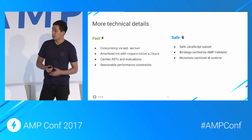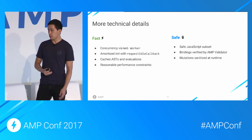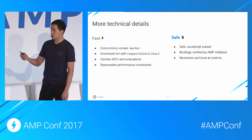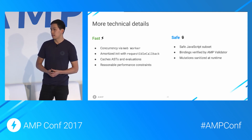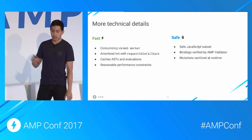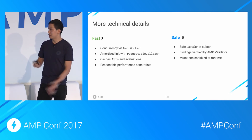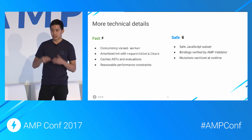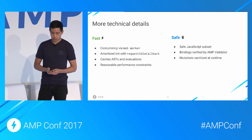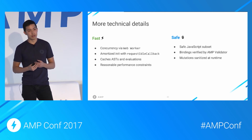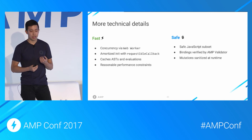Some more cool technical details. Concurrency via WebWorker, as mentioned. We amortize the initialization cost of amp-bind by looking up all the bindings in the DOM with requestIdleCallback to avoid introducing jank. Abstract syntax trees and evaluation results are cached. We're also investigating reasonable performance constraints on the expressions. Bindings are verified by the same logic used to validate in the AMP validator, and we sanitize the results of expressions at runtime. The main point is that we focus on making things fast and safe, ensuring amp-bind lives up to AMP's principles of being fast, safe, and user-friendly.